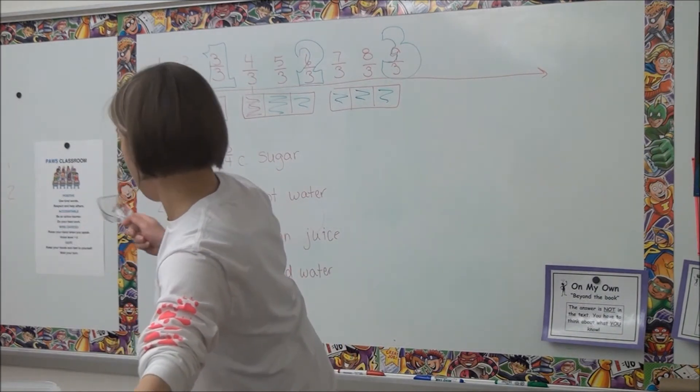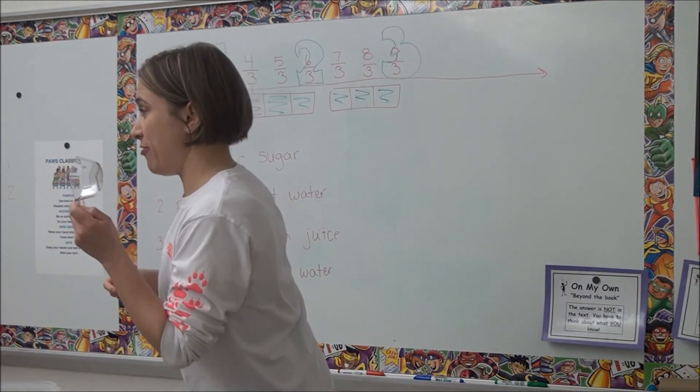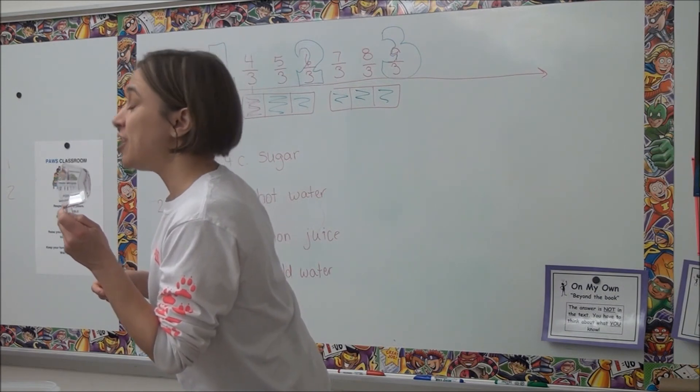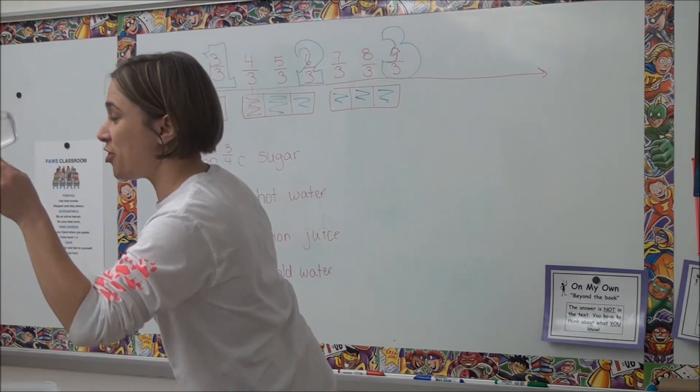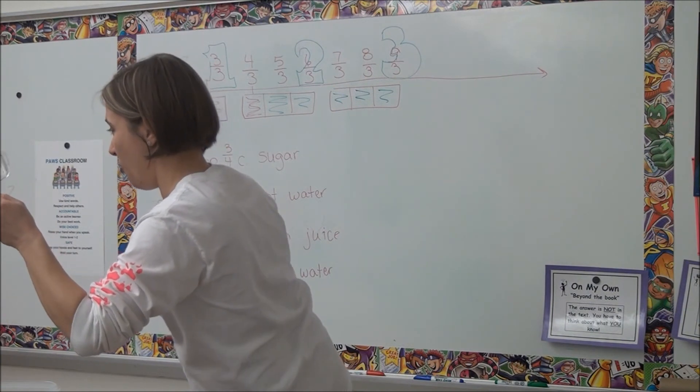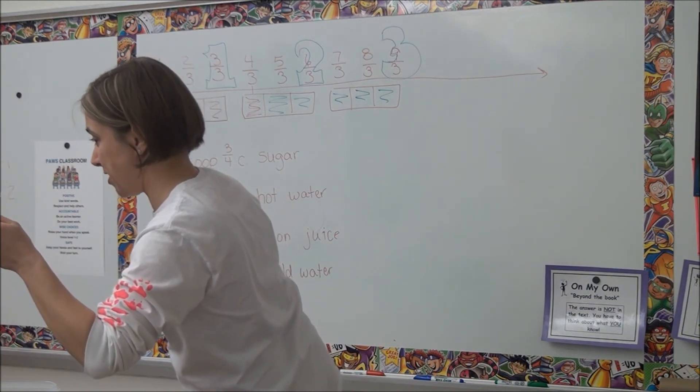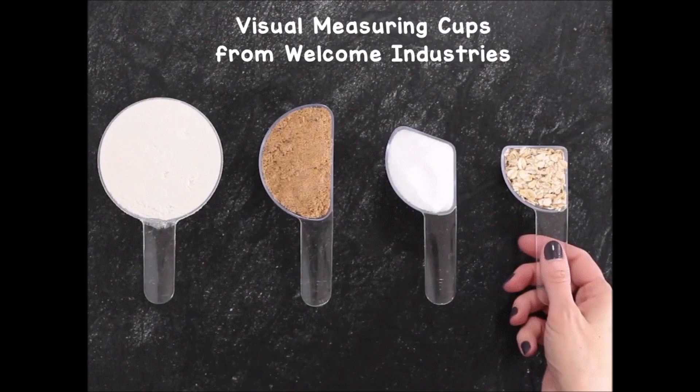Do you remember? One. But you only have a third cup over here. You need three thirds to make one whole cup. Does that make sense? Does that make sense?